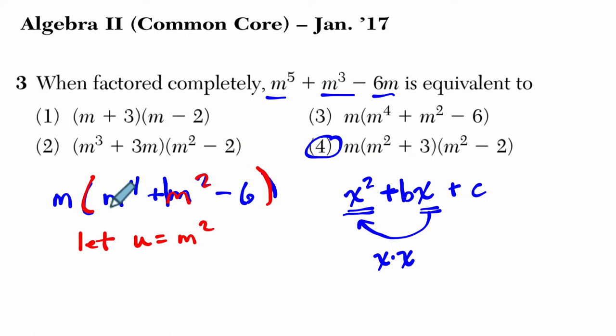And I'm going to rewrite this trinomial using u. So u is m squared, right? So first of all, m squared squared, what's that? Multiply the exponents. That's m to the fourth.